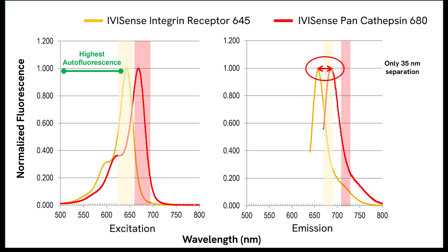Now there is only 35 nanometers in separation between the probes and much greater spectral overlap. The vertical bars represent the optimal bandpass filters for each probe. It will not be possible to use bandpass filters to capture the light from one probe without also capturing light from the other probe given their high degree of overlap. Furthermore, the 645 nanometer probe overlaps more with tissue autofluorescence, so background signal is expected to be higher.